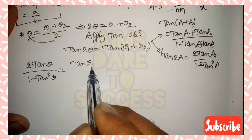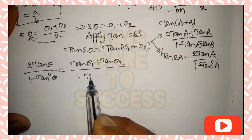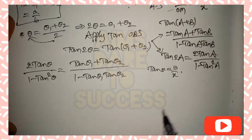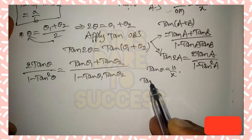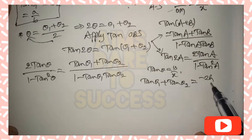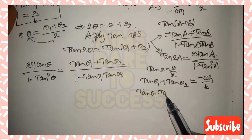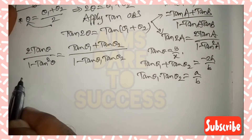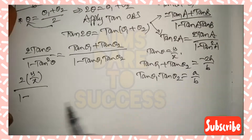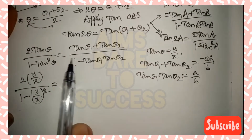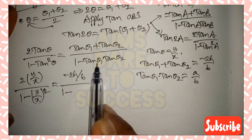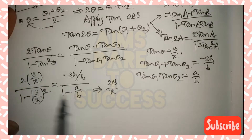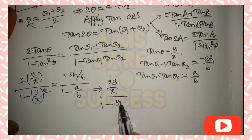Setting the two sides equal: 2 tan θ / (1 − tan² θ) = (tan θ₁ + tan θ₂) / (1 − tan θ₁ · tan θ₂). Substituting tan θ = y/x, tan θ₁ + tan θ₂ = −2h/b, and tan θ₁ · tan θ₂ = a/b, we get: (2y/x) / (1 − y²/x²) = (−2h/b) / (1 − a/b).